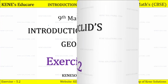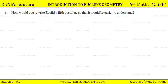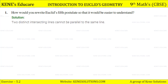Let's start from Question Number 1: How would you rewrite Euclid's fifth postulate so that it would be easier to understand? The answer is: two distinct intersecting lines cannot be parallel to the same line.